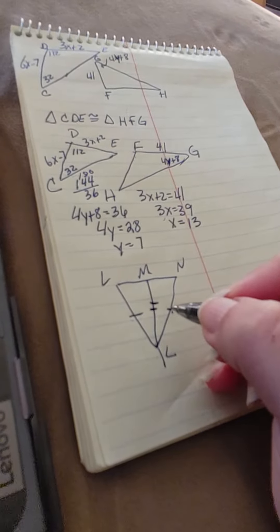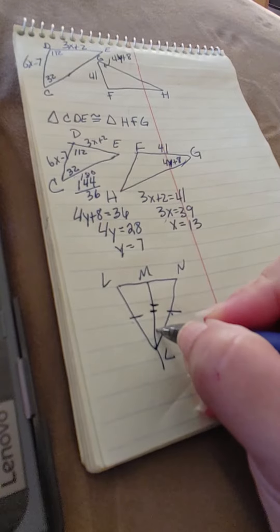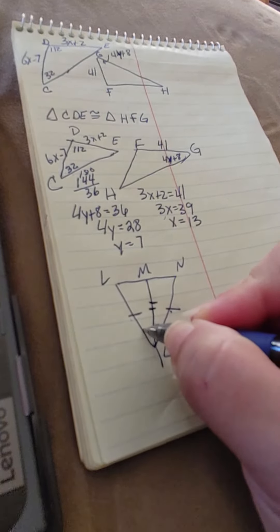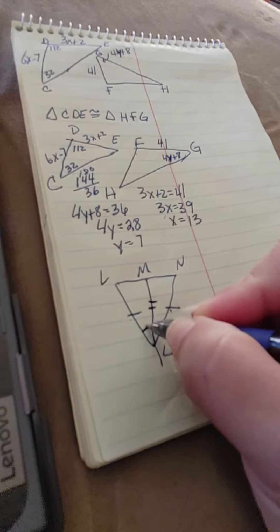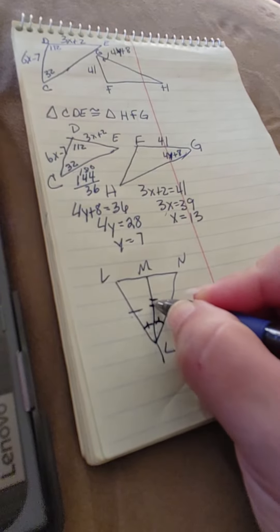So we have to have side, angle, side. So that means we would have to have these angles in order to prove side, angle, side.